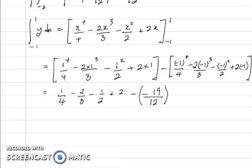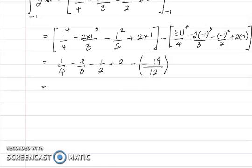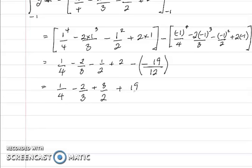We just need to work out the left-hand side. 2 minus a half is one and a half, so this is a quarter minus 2 over 3 plus one and a half. One and a half is 3 over 2, so that's plus 3 over 2. And negative times negative gives positive 19 over 12.